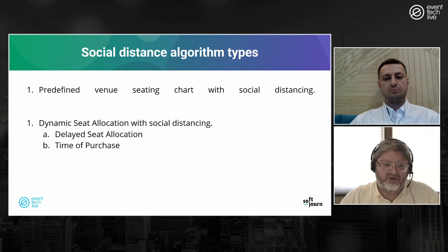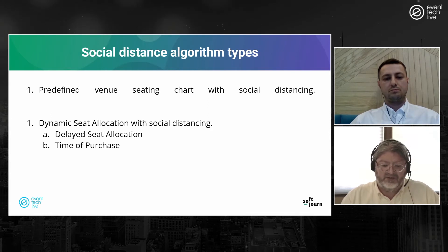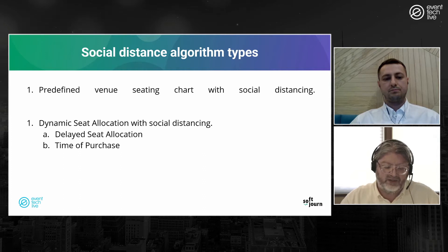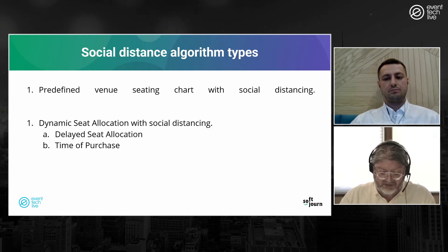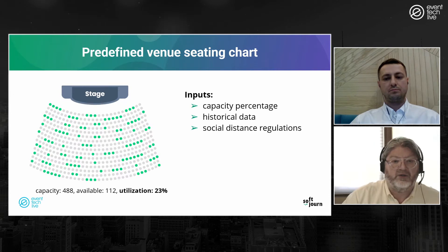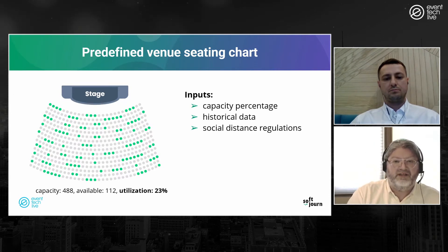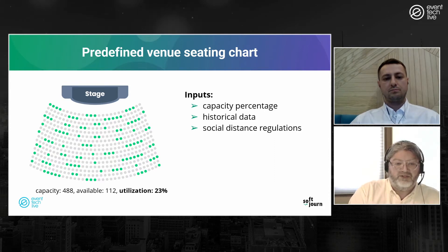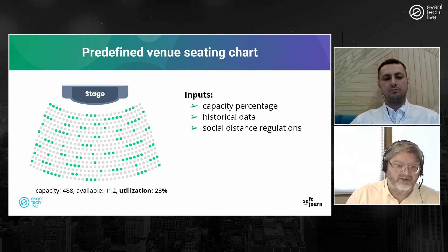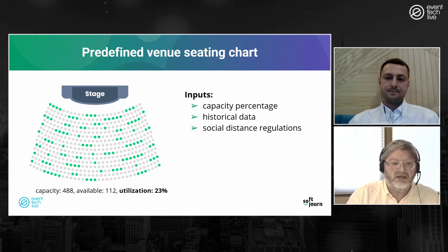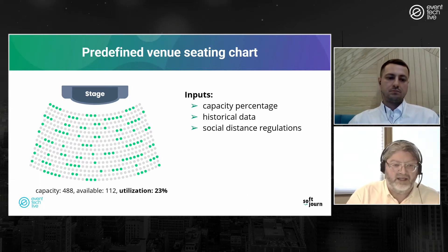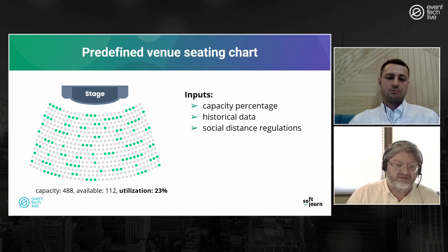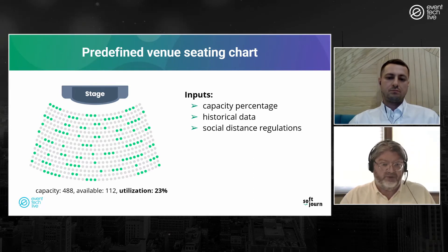Dynamic seat allocation has two main approaches. One is delayed — just before the event, you run a best-fit algorithm to allocate seats based on who has bought tickets. The other is done at time of purchase. Here's a simple example of a venue seating chart with a capacity of 488 seats showing 23% utilization, with groups of one, two, three, up to six.